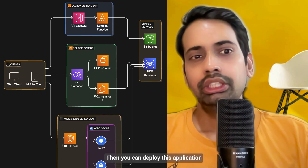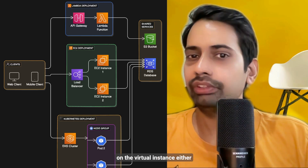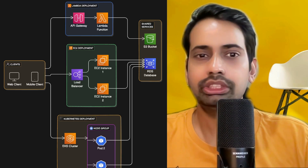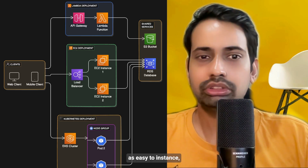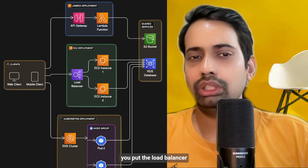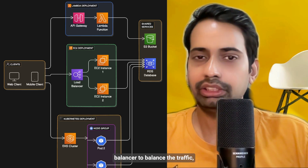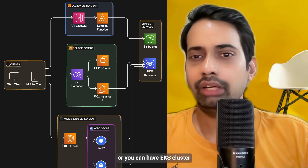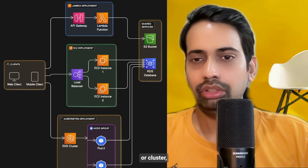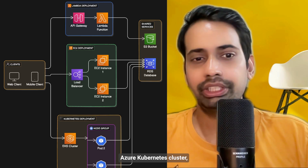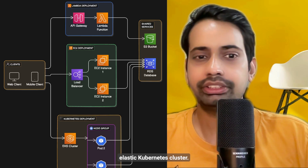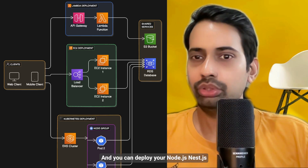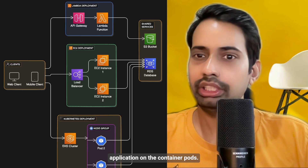You can also deploy this application on a virtual instance — either an Azure Virtual Machine or an AWS EC2 instance — and put a load balancer, such as an Application Load Balancer, to balance the traffic. Or you can have an EKS cluster or AKS cluster (Azure Kubernetes cluster, Elastic Kubernetes cluster) and deploy your Node.js/NestJS application on container pods.